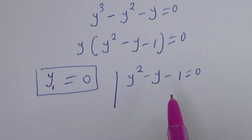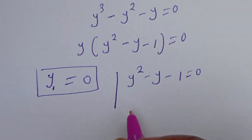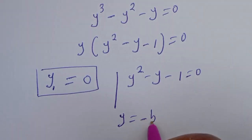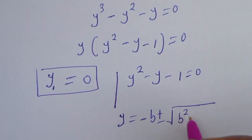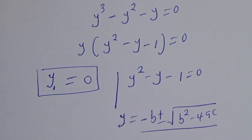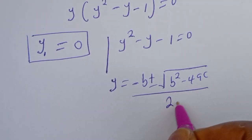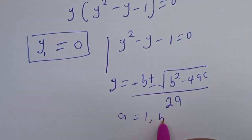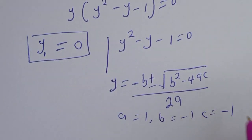From here, Y squared minus Y minus 1 equals zero is a quadratic equation, solved with the quadratic formula: Y is equal to minus B plus or minus square root of B squared minus 4AC, over 2A. Here A is equal to 1, B is equal to minus 1, C is equal to minus 1.